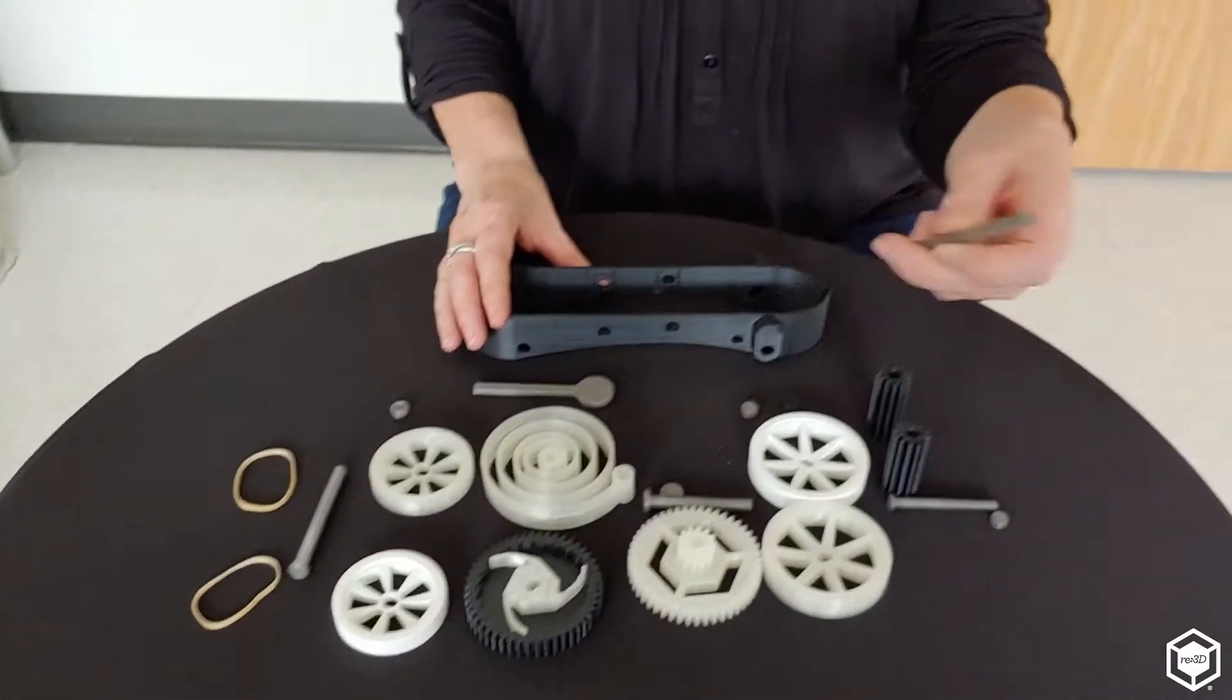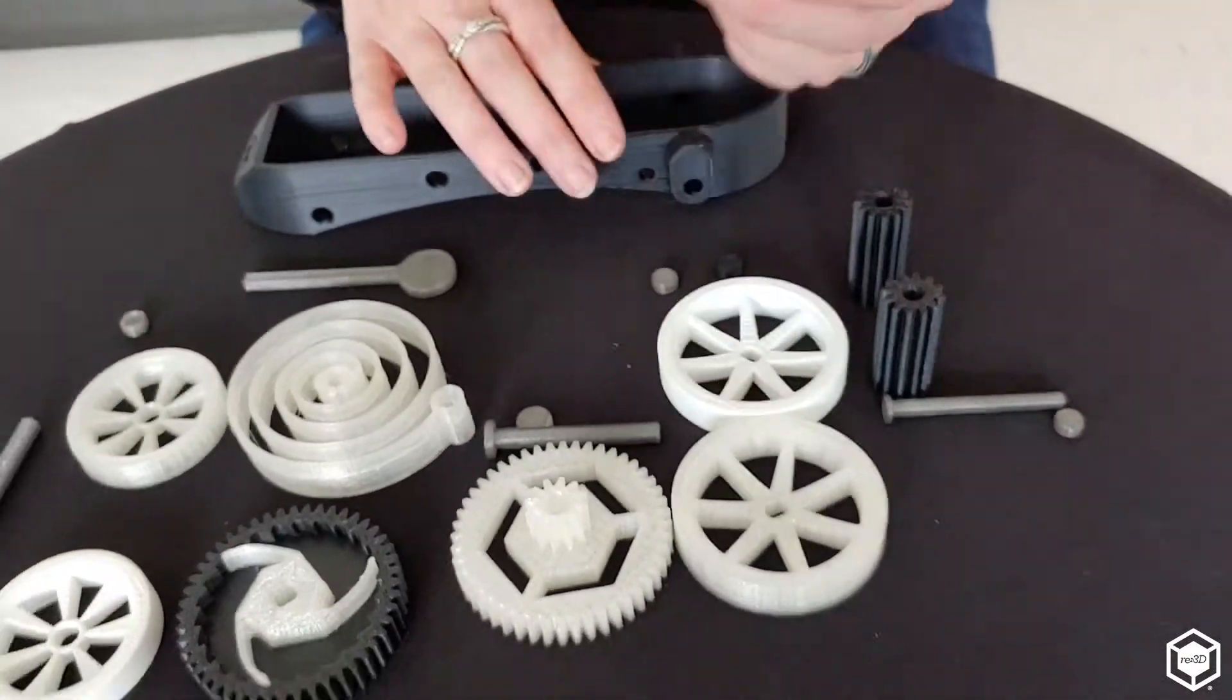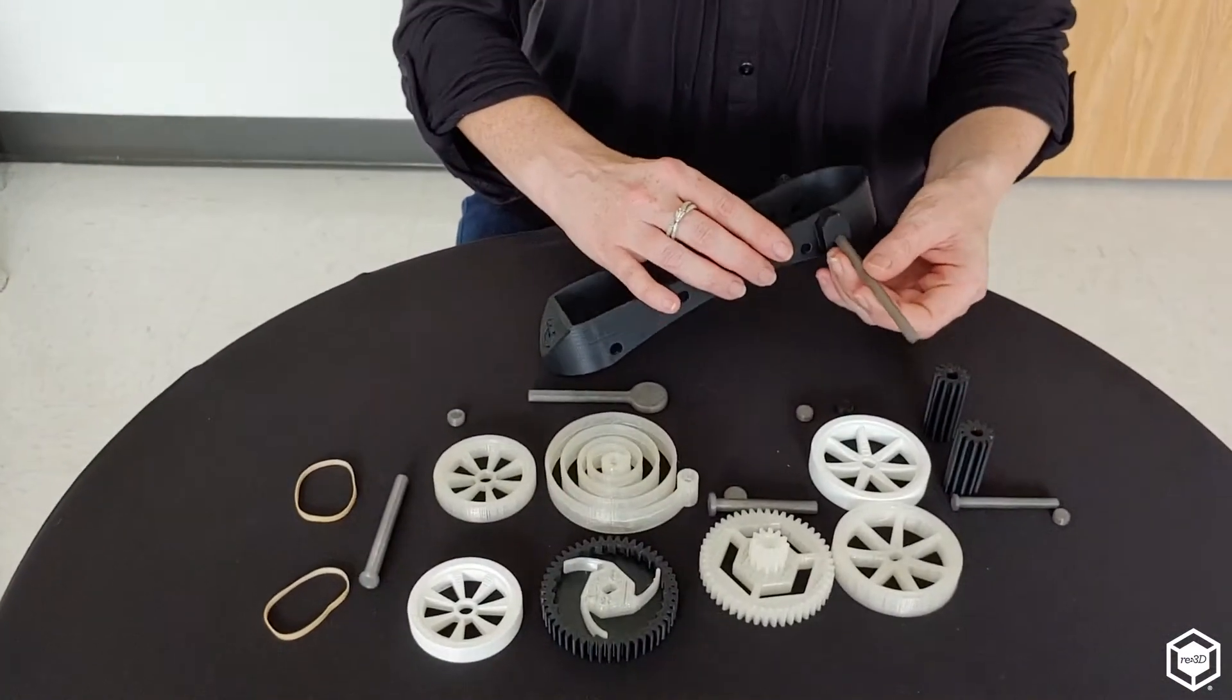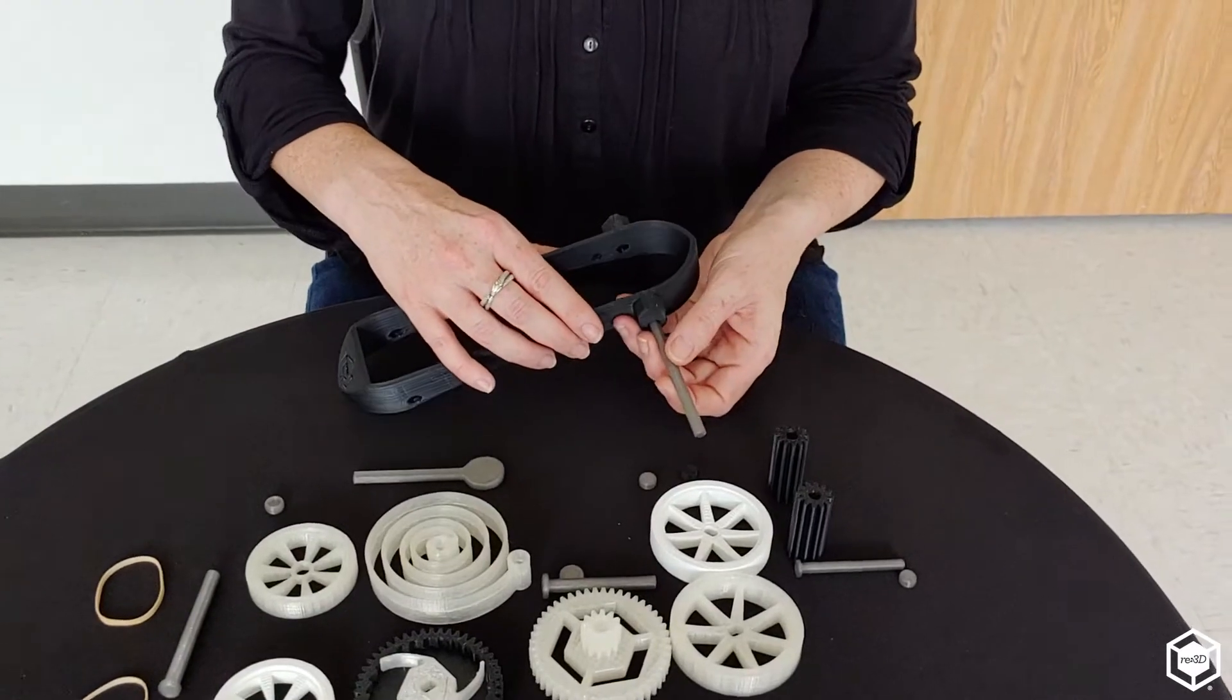So we'll start with the rear axle, which is oval-shaped. We'll put it through one side of the back hole of the car.